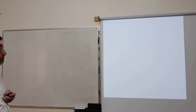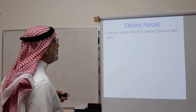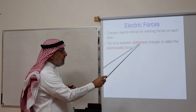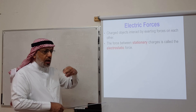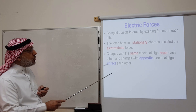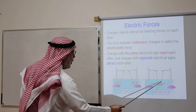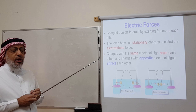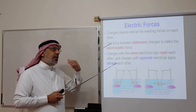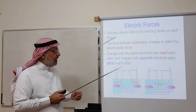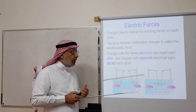An object is said to be charged if it has a net charge. The SI unit for electric charge is the Coulomb, symbol capital C. Charged objects interact by exerting forces on each other. The force between stationary fixed charges is called the electrostatic force. Charges with the same sign repel each other, while charges with opposite signs attract. Unlike gravity, which is always attractive, electrostatic forces can be attractive or repulsive.